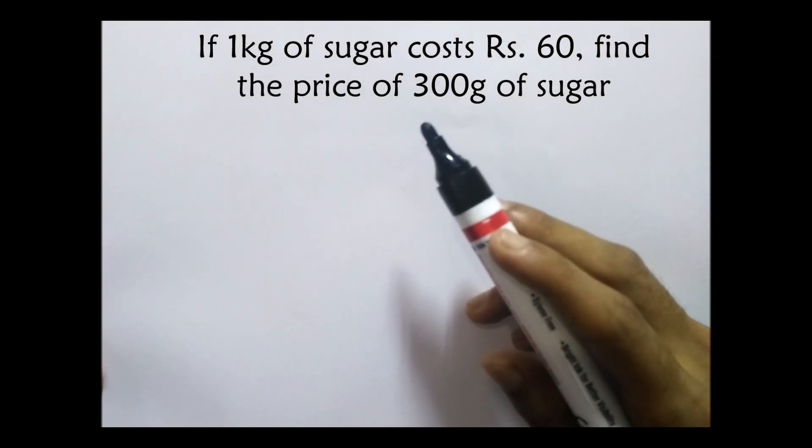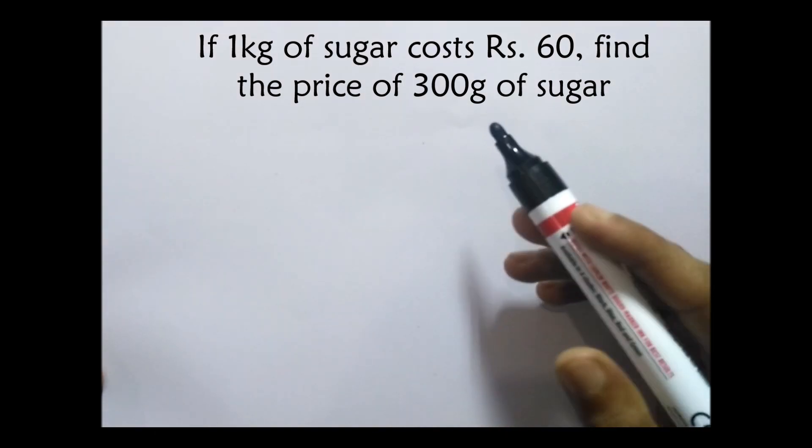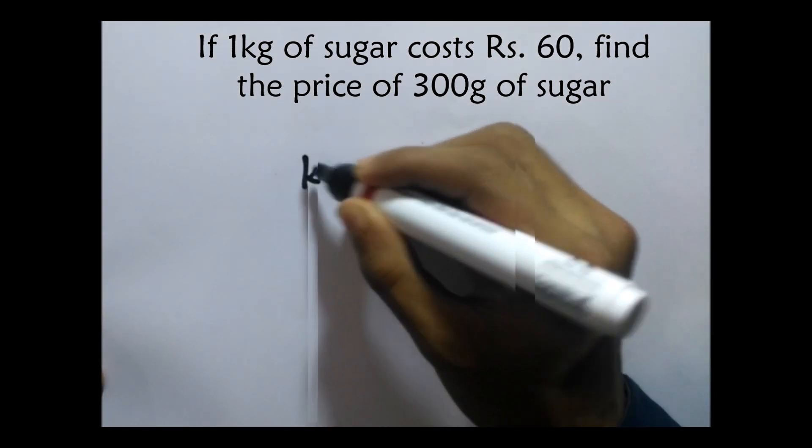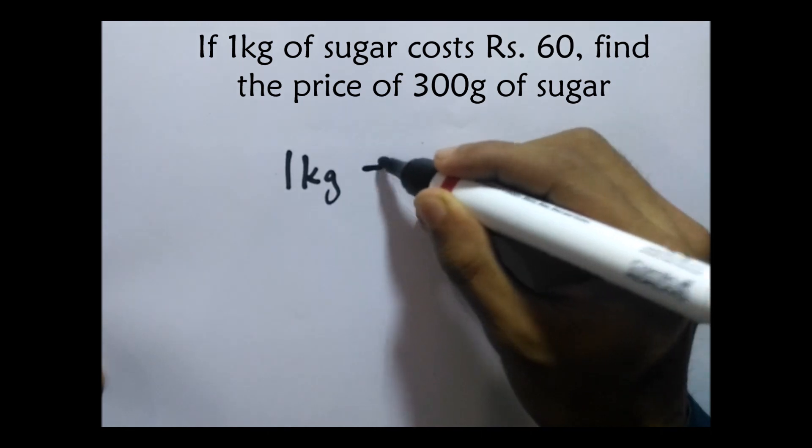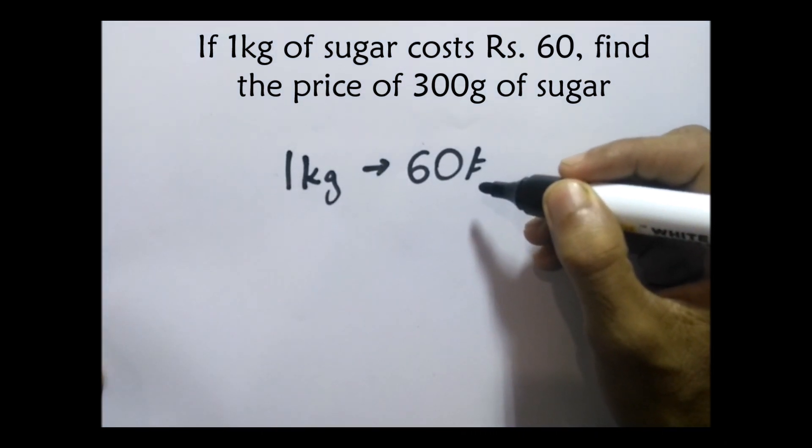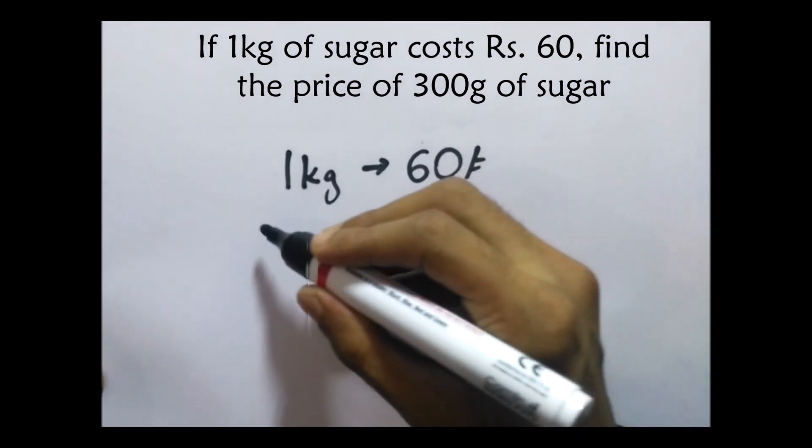if one kilogram of sugar costs 60 rupees, find the price of 300 grams. So if one kilogram costs 60 rupees, how do we calculate the price of 300 grams? Before that,